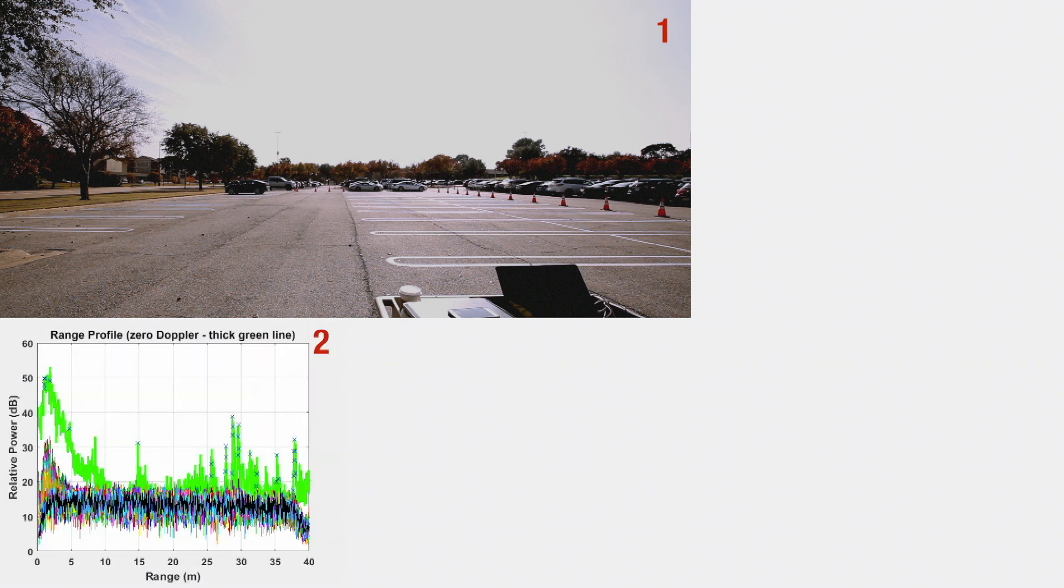Plot 2 shows the signal amplitude at different ranges. The green line represents static range profile. Other velocity profiles are represented by different colors. The peaks correspond to objects seen by the radar at various range. In this time instance, nothing is moving.